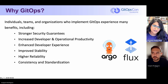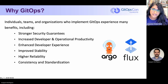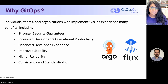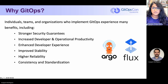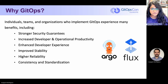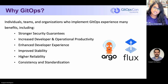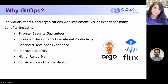So why should you care about GitOps? There are three value props of GitOps: security, velocity, and reliability. Individuals, teams, and organizations who implement GitOps experience many benefits, including stronger security guarantees. Because of GitOps tools' unique ability to treat everything as code, this creates a direct impact on security. If all configuration and security policy is treated as code, everything can be held in version control, so any changes can be reviewed and input into an automated pipeline with no manual processes.